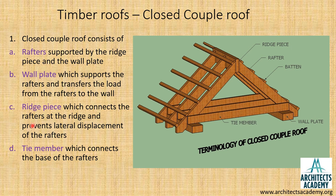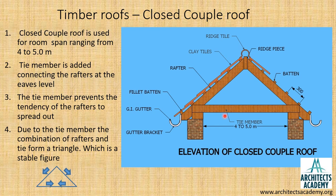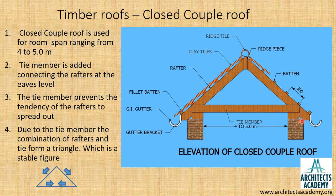The wall plate supports the rafters and transfers the load from the rafters to the wall. The ridge piece connects the rafters at the ridge and prevents lateral displacement of the rafters. The tie member connects the base of the rafters, forming a triangle which is a stable figure. As a result of the addition of the tie member, the tendency of the rafters to slide away from each other is arrested, and the overturning of the walls is also prevented.